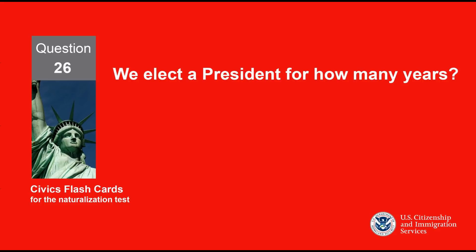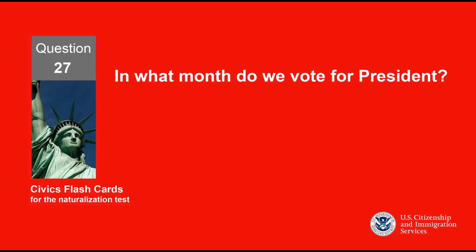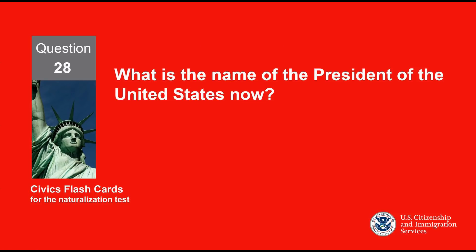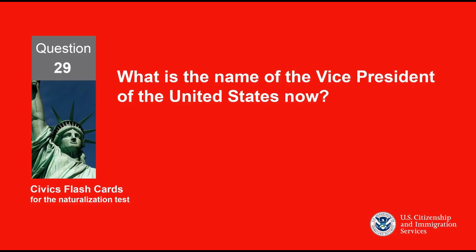We elect a president for how many years? Four years. In what month do we vote for president? November. What is the name of the president of the United States now? Joe Biden. What is the name of the vice president of the United States now? Kamala Harris.